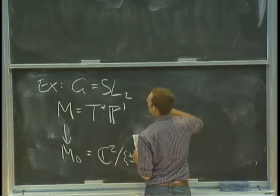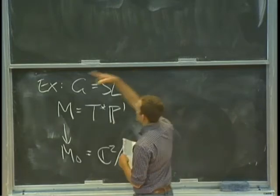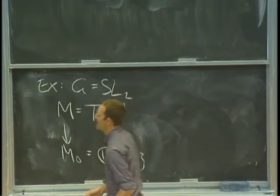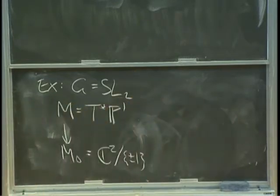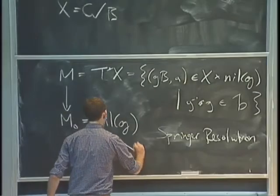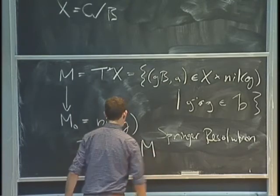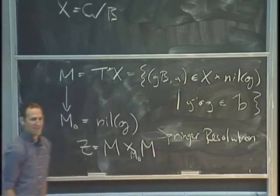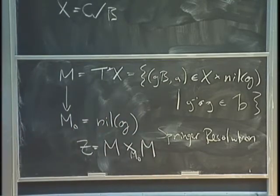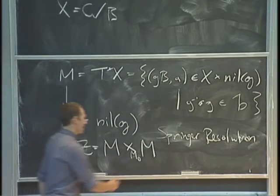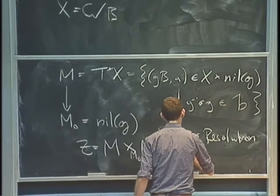I want to define Z to be the fiber product of M with itself over M0. This is something that Victor talked about in his talks — it's usually called the Steinberg variety.